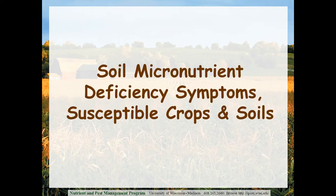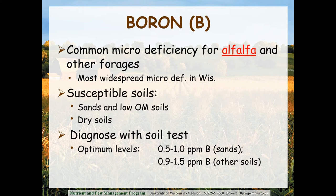For soil micronutrient deficiency symptoms and the susceptible crops and soils, we'll talk about boron first. Boron is the most common micronutrient deficiency for alfalfa and other forages — in fact, it is the most commonly widespread micro deficiency in Wisconsin soils and cropping systems. Susceptible soils: boron is a negatively charged anion and low organic matter soils and sandy soils don't hold a lot of it. Also, dry soils reduce the ability of boron to get into the soil solution and be taken up by crop roots. Once these soils get adequate precipitation or irrigation water, the boron deficiency typically goes away.